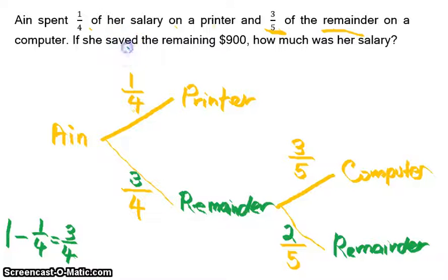If she saved the remaining nine hundred dollars, in which case we need to find out the final remainder at this area. So how do we do that? We take this fraction here, we need to multiply with this fraction here. When we multiply this fraction here, we'll get, let's do it: three times two is six.